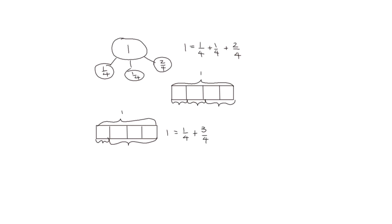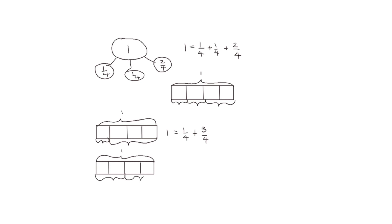A different way we could do it: our whole number 1, broken into fourths. This time we could group 2 fourths and 2 fourths, and our number sentence would be 1 is equal to 2 fourths plus 2 fourths.